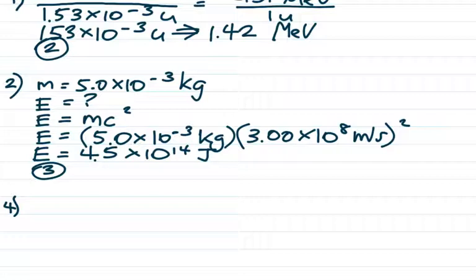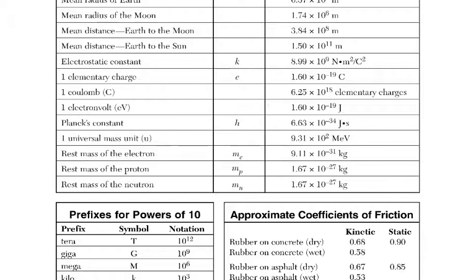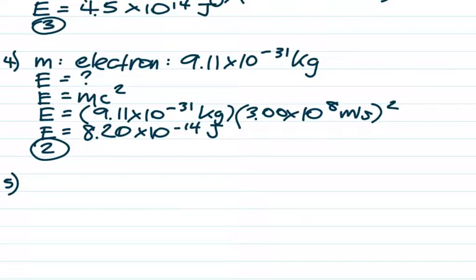Number 4 is just like number 2, except they don't explicitly give you a mass — they tell you it's the rest mass of an electron. You don't have to memorize that, but you do have to memorize where you can find it: front page of the reference table. Rest mass of the electron is 9.11 times 10 to the negative 31 kilograms. They say rest mass because when particles move very quickly at large fractions of the speed of light, there are relativistic changes in mass. E equals mc squared — don't forget to square C — and you get 8.2 times 10 to the negative 14 joules. Choice 2.